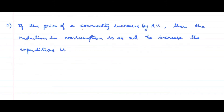If the price of a commodity increases by R percent — this is the commodity type of problem — then the reduction in consumption so as not to increase the expenditure will be equal to R divided by (100 + R) into 100 percent. This is the formula.